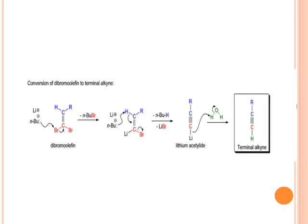The third step is conversion of dibromo olefin to terminal alkyne. The corresponding terminal alkyne can be accomplished by treatment of the dibromo olefin with two equivalents of n-butyl lithium at around minus 78 degrees centigrade. Basically, it involves lithium-halogen exchange followed by elimination, and this process is then followed by hydrolysis. The intermediate here is lithium acetylide, which can be treated with a number of electrophiles to produce a wide variety of useful derivatives.